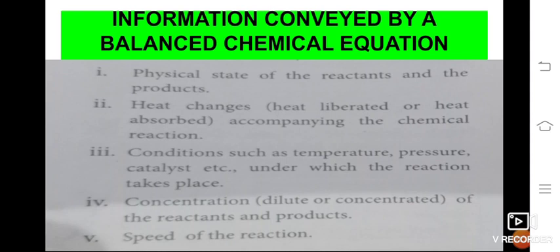Information we get from a chemical equation: when we see the equation, we can know the state of matter — whether it is solid, liquid, or gaseous. We can also read heat changes, color changes, the condition needed (concentrated or diluted), and the speed of the reaction. These are the things we can easily determine when we look at the equation.